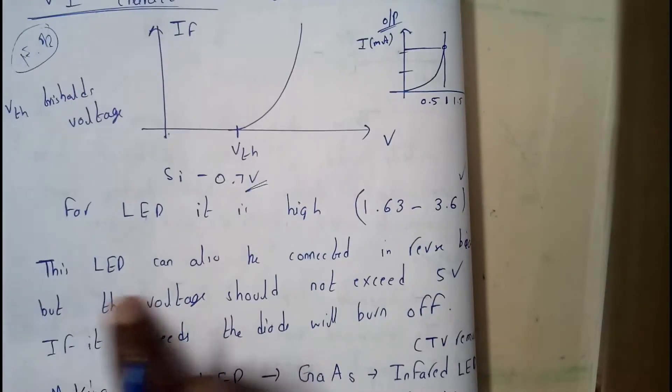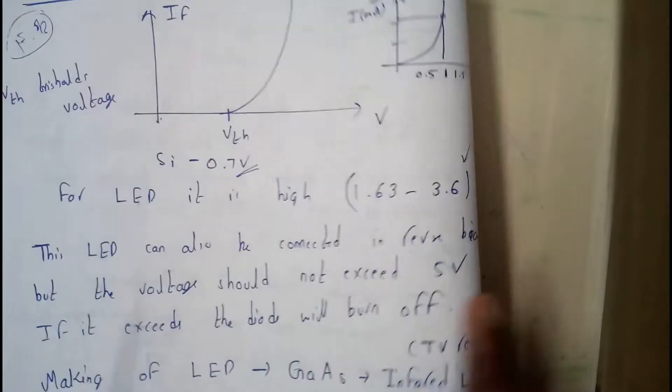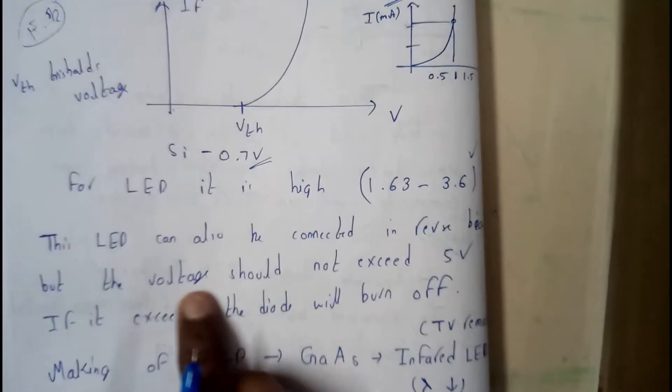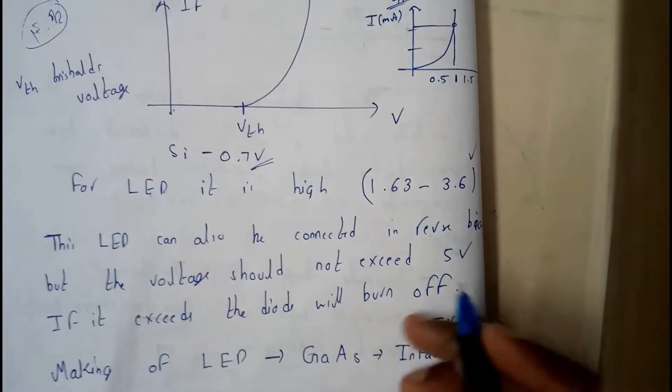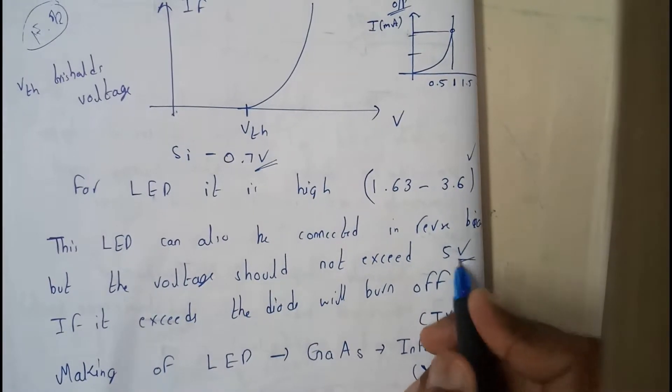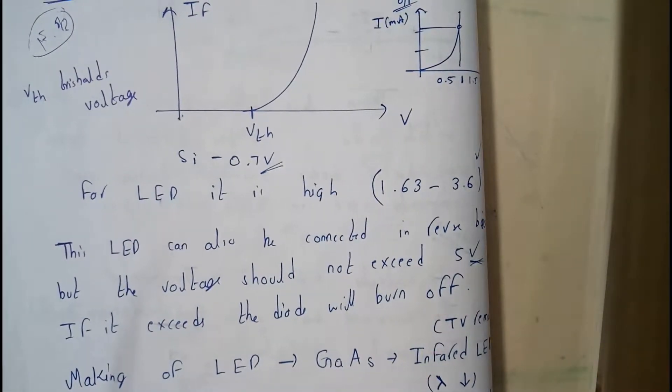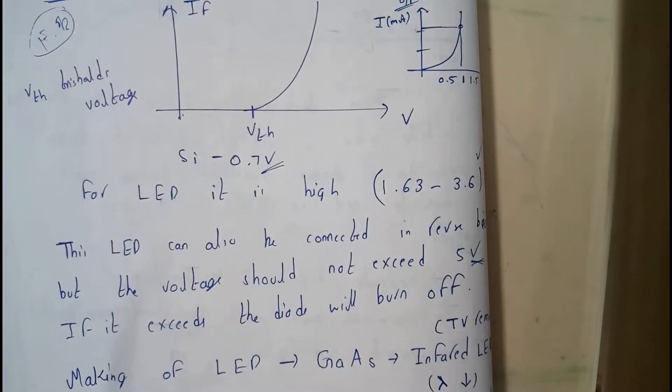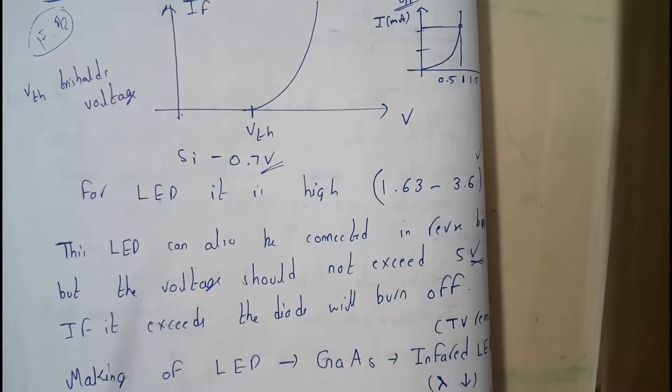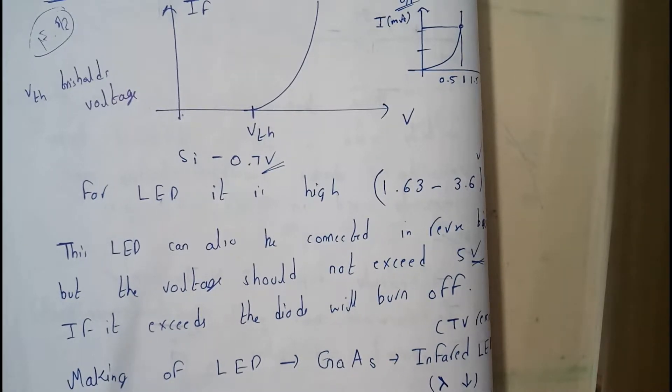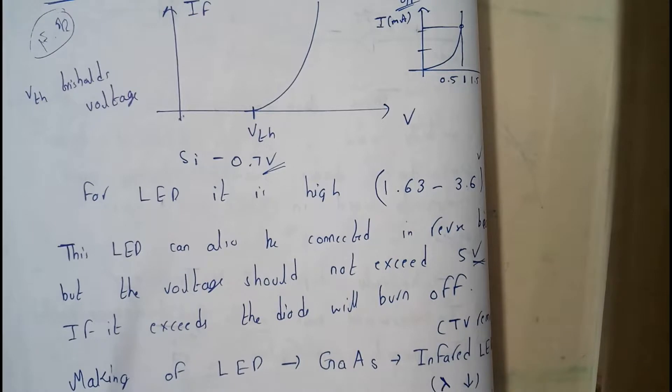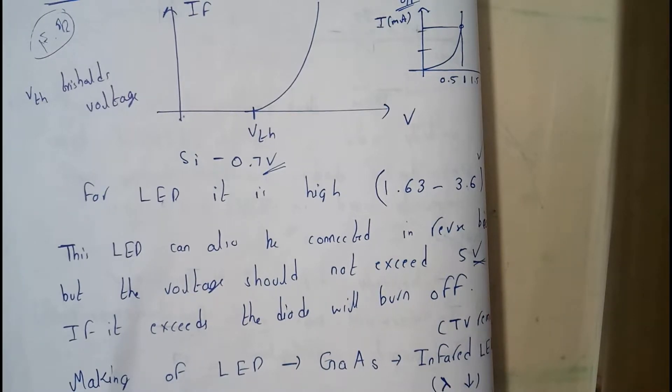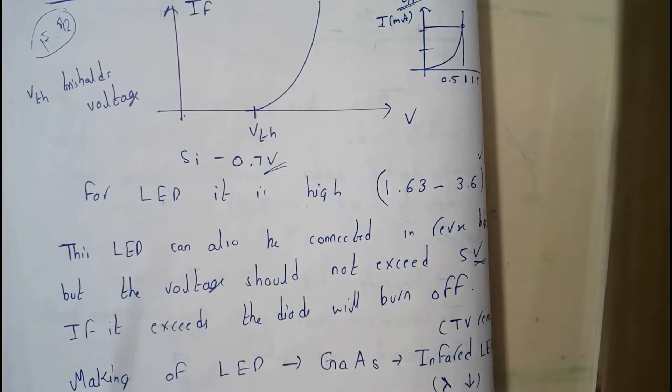This LED can also be connected in reverse bias but the voltage should not exceed 5 volts. So even this applies in negative or reverse bias also. But the only problem with reverse bias is that it is not possible above 5 volts - it should be less than 5 volts.